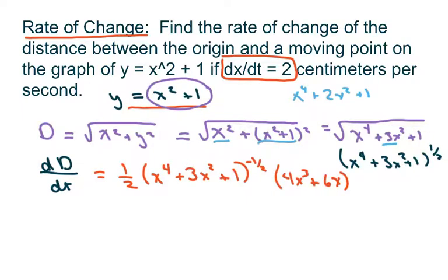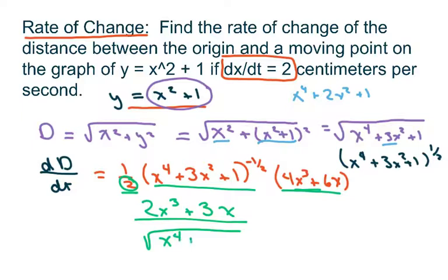All right, and when you clean this up, you're going to get, if I combine these two, that's going to be 2x cubed plus 3x. I'm just taking half of this, and then I'm going to move him to the denominator, which is just going to be the square root of x to the fourth plus 3x squared plus 1. And I should have put dx over dt here, dx dt.